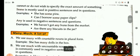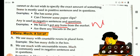Any is used in negative sentences and also in questions. As we have already learned just now, we haven't got any buns from the market. Here, any means no. Are there any biscuits in the jar? Here, any is used in the form of a question. It is also used in questions.